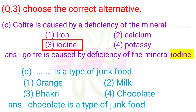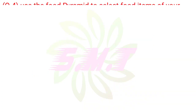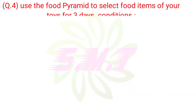D. Which is a type of junk food? 1. Orange, 2. Milk, 3. Bhakri, 4. Chocolate. Answer: Chocolate is a type of junk food.